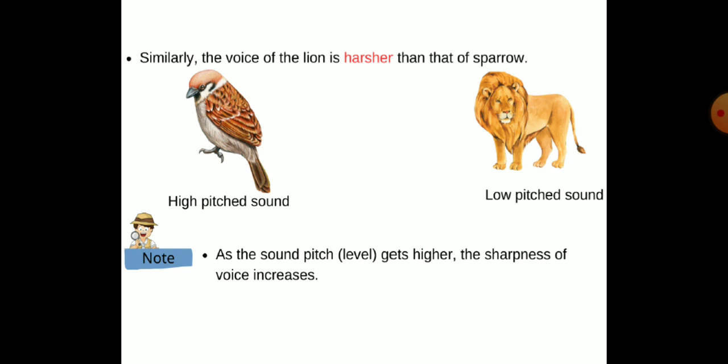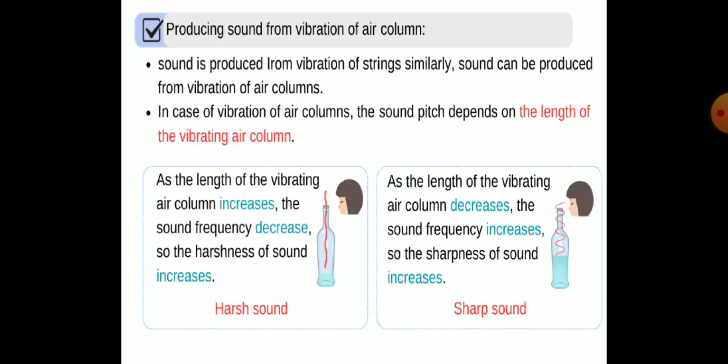As you see in this picture, the voice of a lion is harsher than that of a sparrow. Regarding sound produced from a vibrating air column: as the length of the vibrating air column increases, the sound frequency decreases, so the harshness of sound increases. As the length of the vibrating air column decreases, the sound frequency increases, so the sharpness of sound increases.